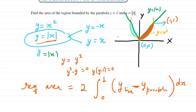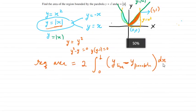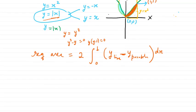There is one more method: you can see there is a triangle, so you can first find the area of the triangle and then subtract the white area underneath. That is another approach, but here we continue with the integral method.